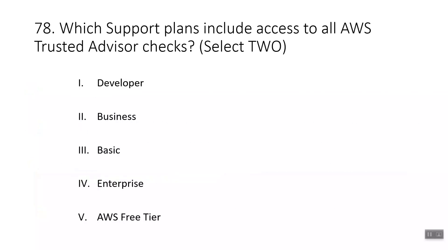Question seventy-eight: which support plans include access to all AWS Trusted Advisor checks? The correct answers are Enterprise and Business. AWS Business and Enterprise support customers can access all checks including cost optimization, security, fault tolerance, performance, and service quotas. Basic and Developer support plans provide access to only a limited selection of checks. AWS Free Tier is not a support plan.